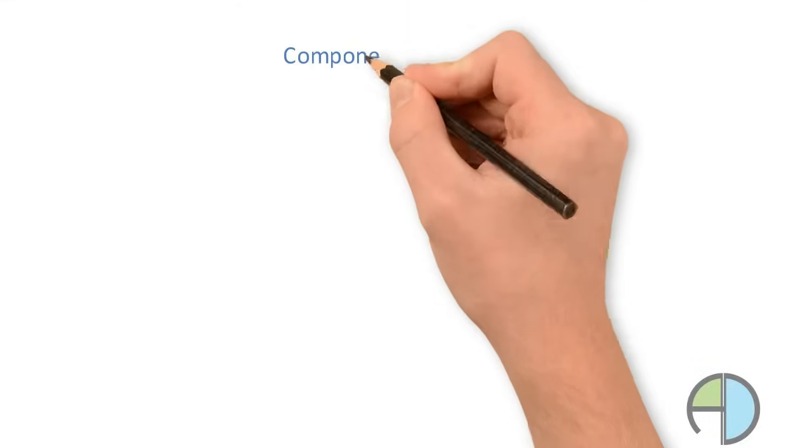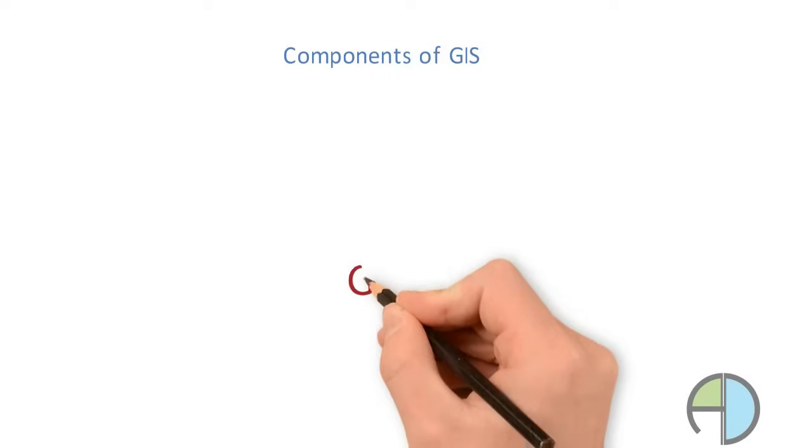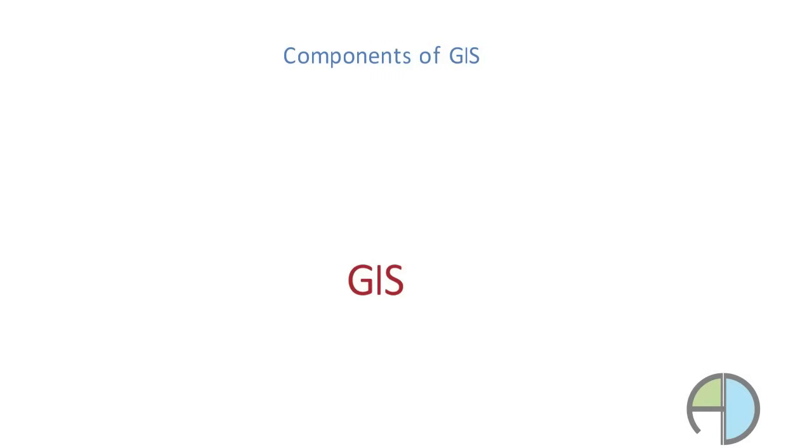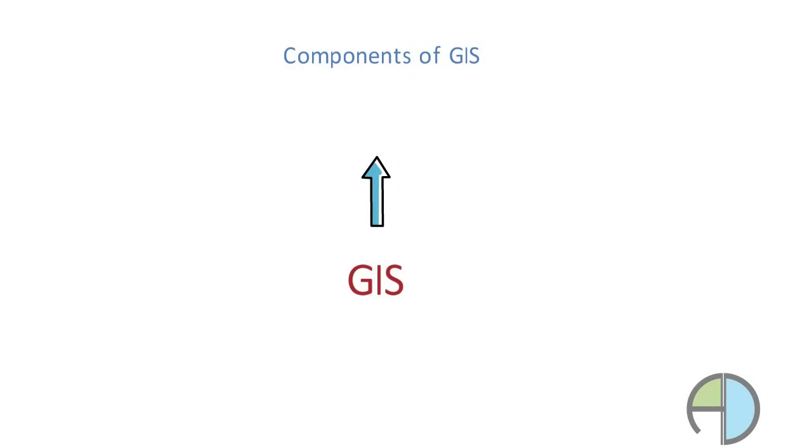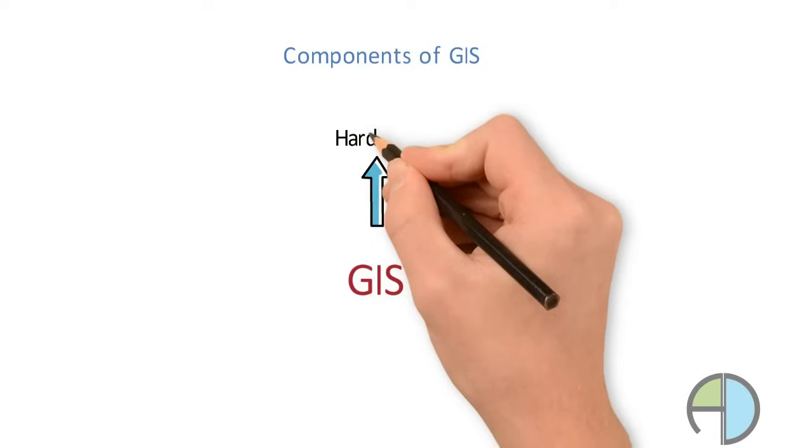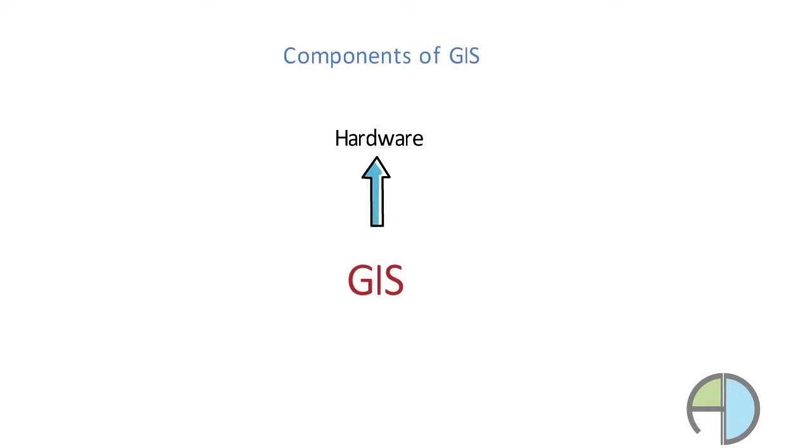Let us talk about components of GIS. Basically, there are five components of GIS. First component is hardware, that is the server and computers that we use for running the GIS application.